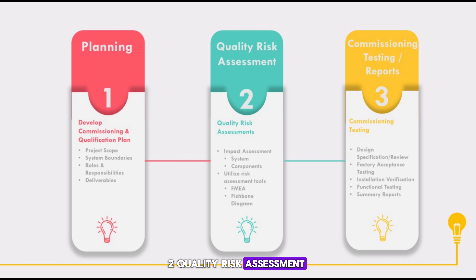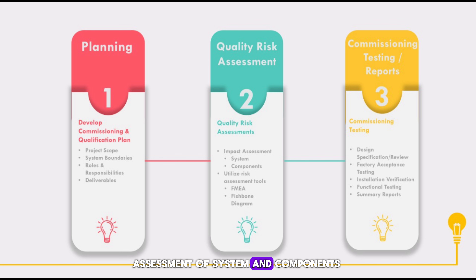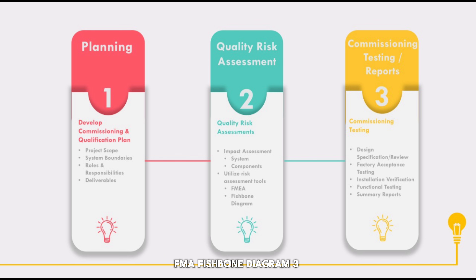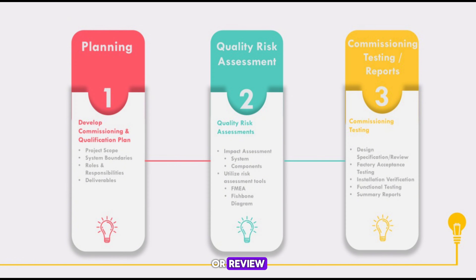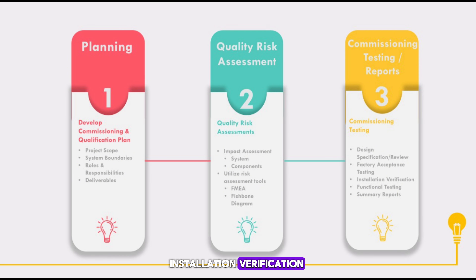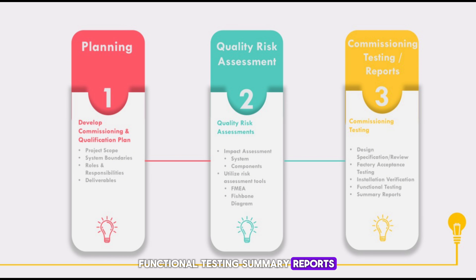Step 2 — Quality Risk Assessment, which includes impact assessment of systems and components, and utilization of risk assessment tools such as FMEA and fishbone diagrams. Step 3 — Commissioning Testing or Reports, which includes design specification or review, factory acceptance testing, installation verification, functional testing, and summary reports.